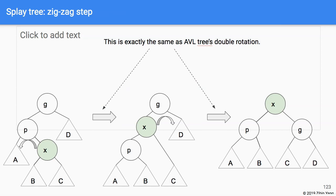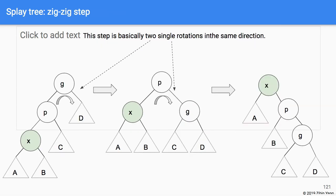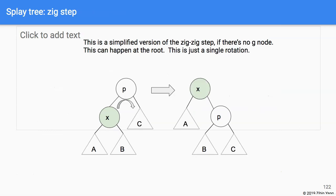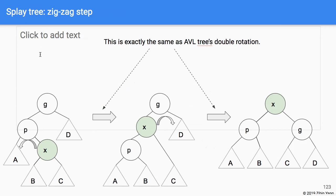Finally, the splay tree has the zig-zag step, which is exactly like AVL's double rotation. To bring x to the top, we do a single left rotation first, then a single right rotation in the other direction, so that x is now at the top of the tree. There are also mirror versions: zag-zag, single zag, and zag-zig.